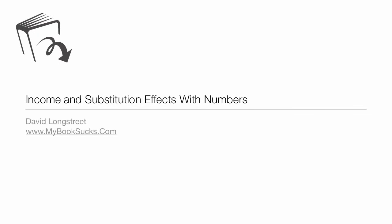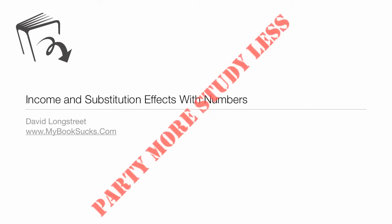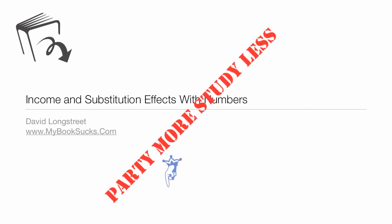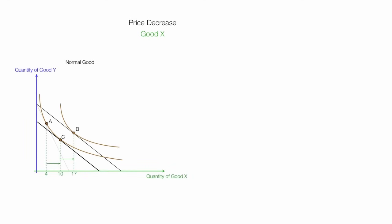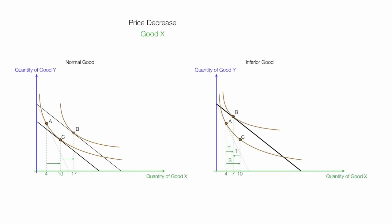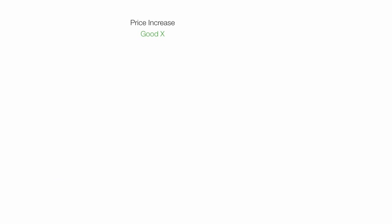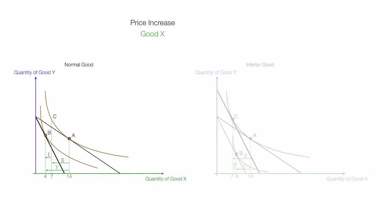In this tutorial, I'm going to discuss the income and substitution effects with some numbers. This video is part of a playlist on consumer theory, and you can see a link to that playlist below. In this video, I'm going to decrease the price of good X, and I'll show you the income and substitution effects for a normal good and also for an inferior good. I will also increase the price of good X and show you income and substitution effects for a normal and inferior good.